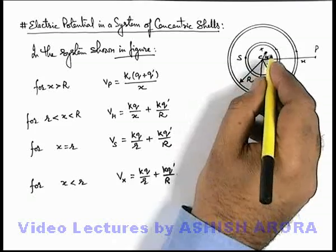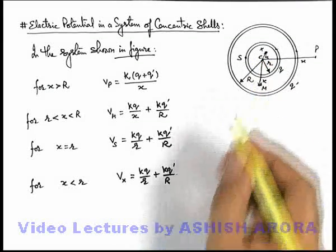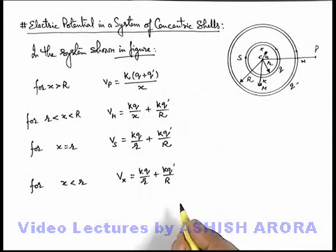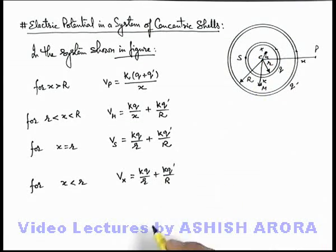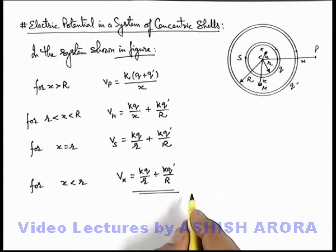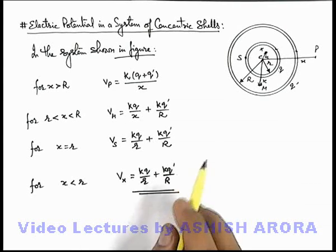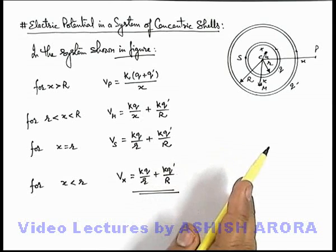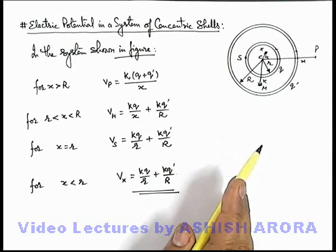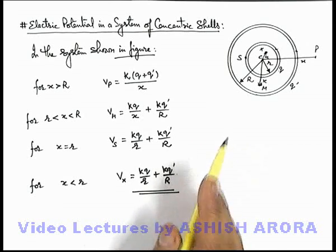Inside the inner shell there exists no electric field. So you must be very careful for such calculations whenever two or more concentric shells are given and we are required to find the potential at any point.